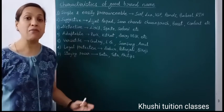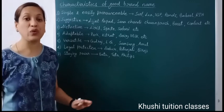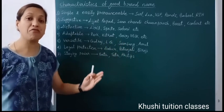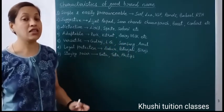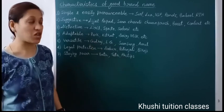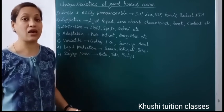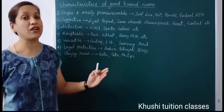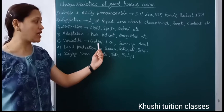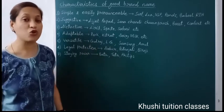The fourth characteristic is adaptable — the brand name should easily fit on your packaging and labeling, and be convenient for advertising, like KitKat, Dairy Milk. The product may come in different quantities, and even in a small size the brand name should fit on it. The fifth is versatile — the brand name should allow many different varieties of products to be introduced under it, like Godrej, LG, Samsung, Amul. Many products have been introduced under all these brand names.